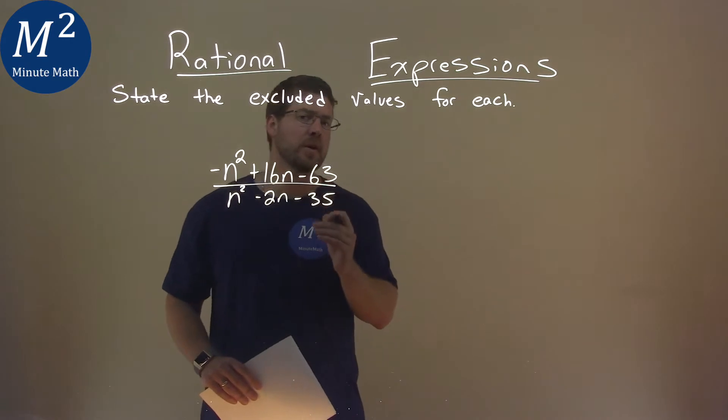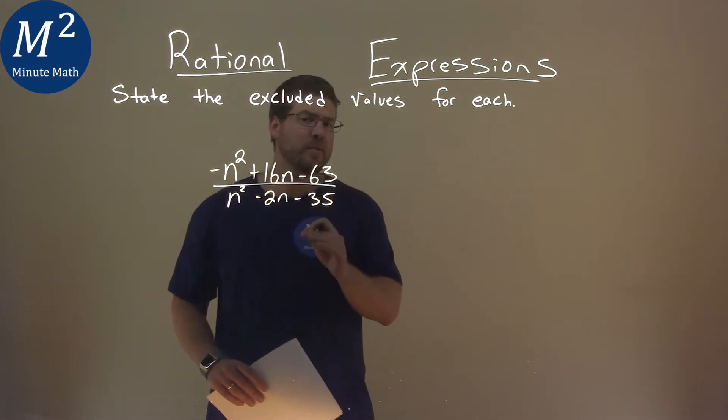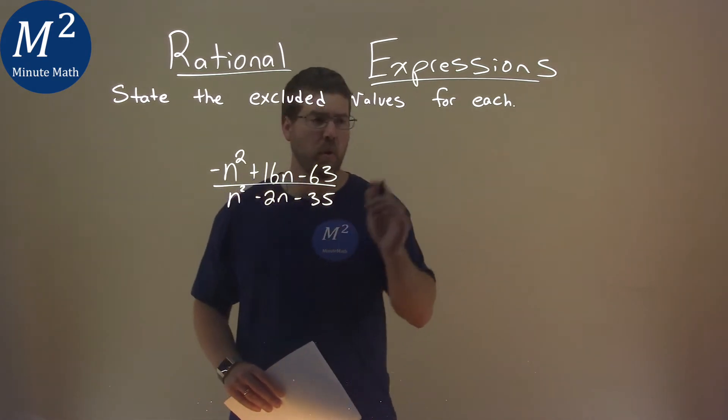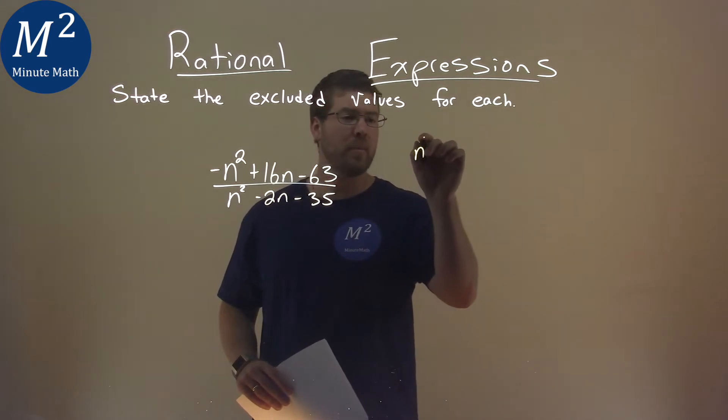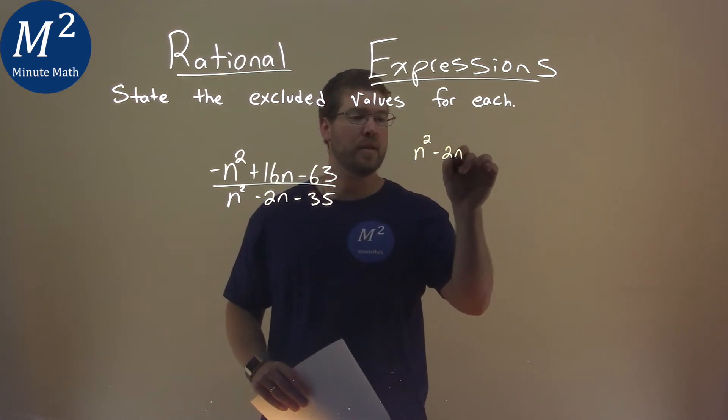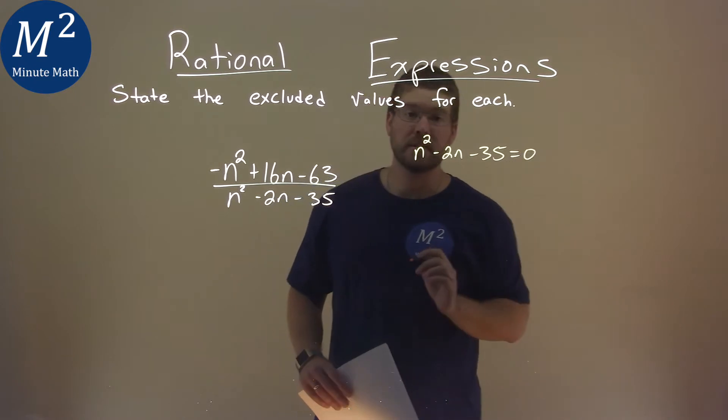Well, since this is a rational equation, or expression, we cannot divide by 0. So we want to find when our denominator, n squared minus 2n minus 35, is equal to 0.